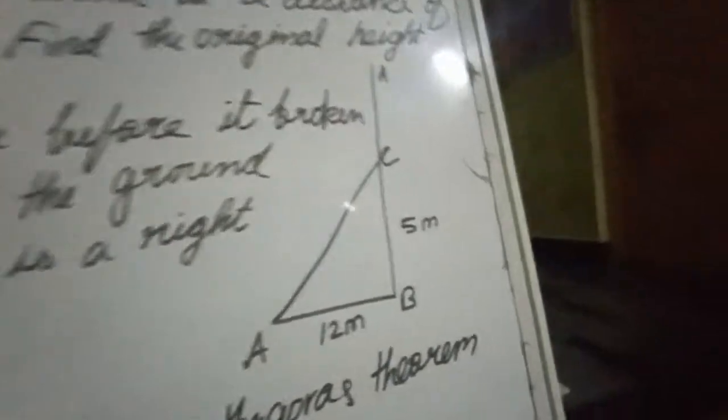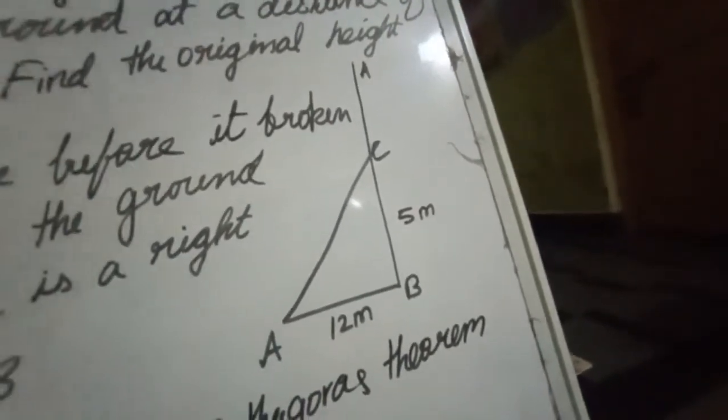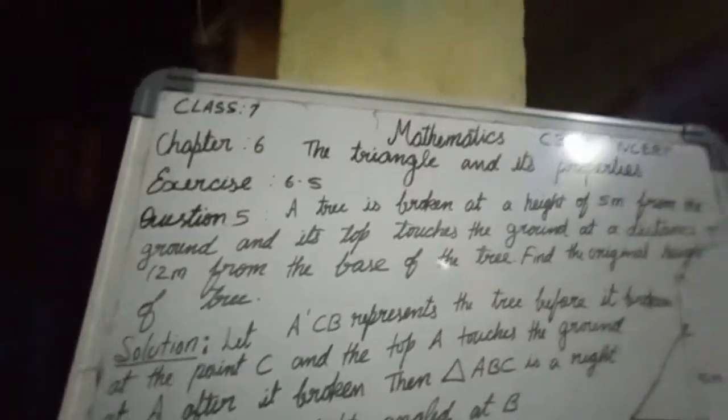So let us write down. Let A, C, B represents the tree before it broken.